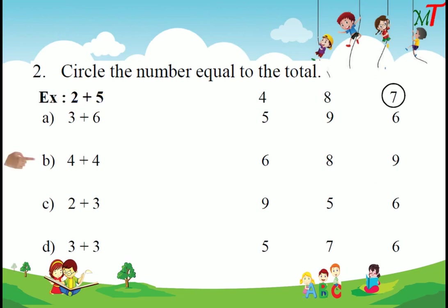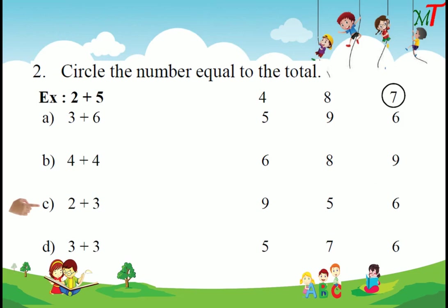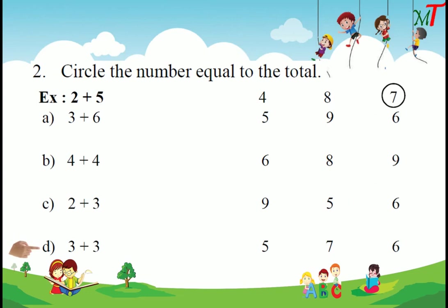Next: 2 plus 4. Then 2 plus 3 — the sum of 2 plus 3 is 5, so we circle 5. And last one: 3 plus 3 — we add, the total sum of 3 plus 3 equals 6, so we circle 6.